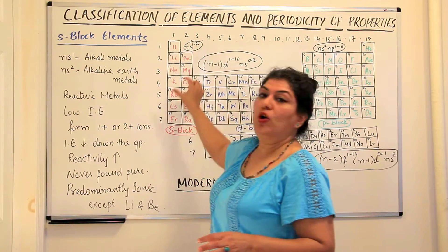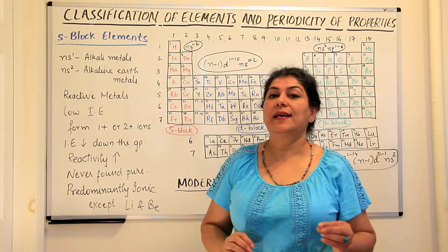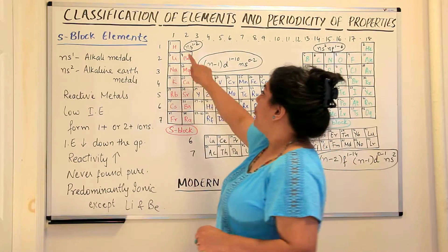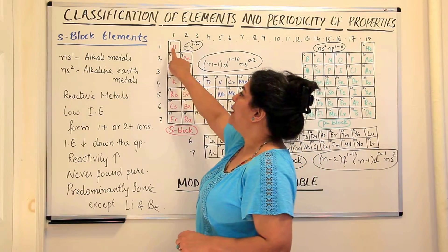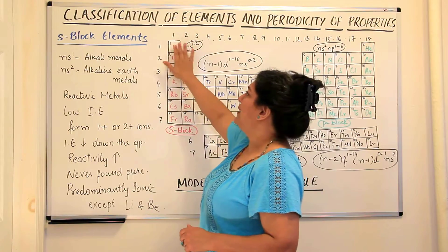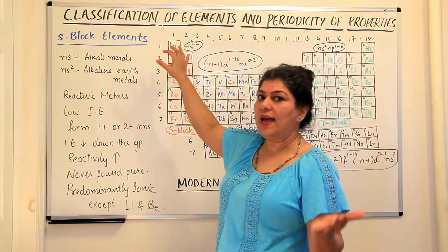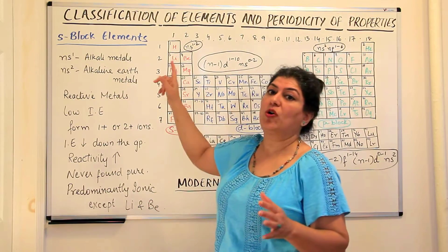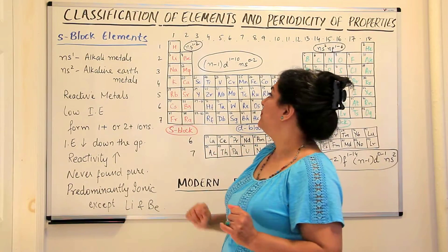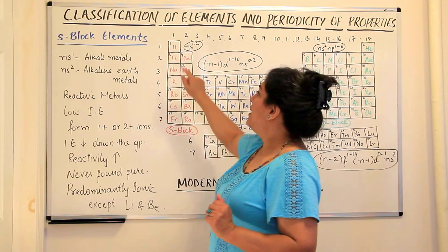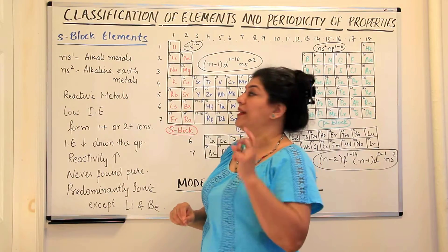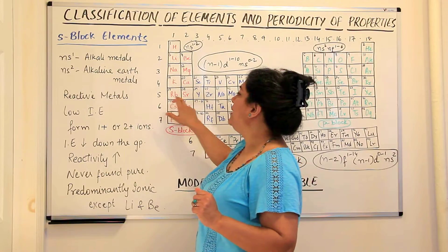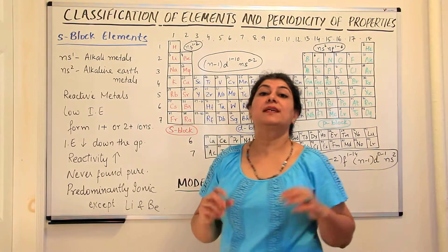The elements that belong to the first group, that is the alkali metals, have one electron in their outermost s orbital. For example, hydrogen has the configuration 1s1, although it's not a metal and in the latest periodic table hydrogen has not been placed here — it has been kept separate because of its dissimilarities with the other alkali metals. Lithium has a configuration of 2s1, sodium 3s1, potassium 4s1, rubidium 5s1, cesium 6s1, and francium 7s1.